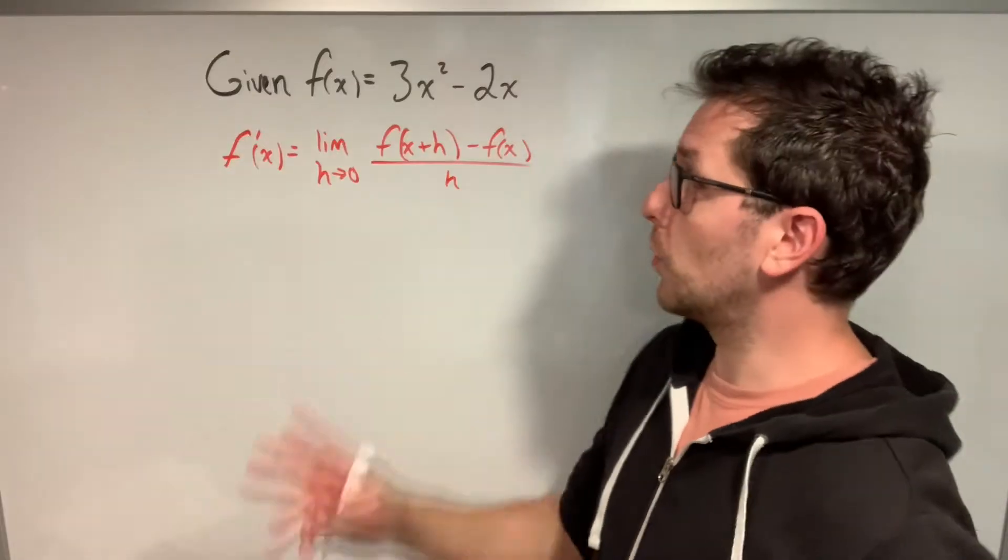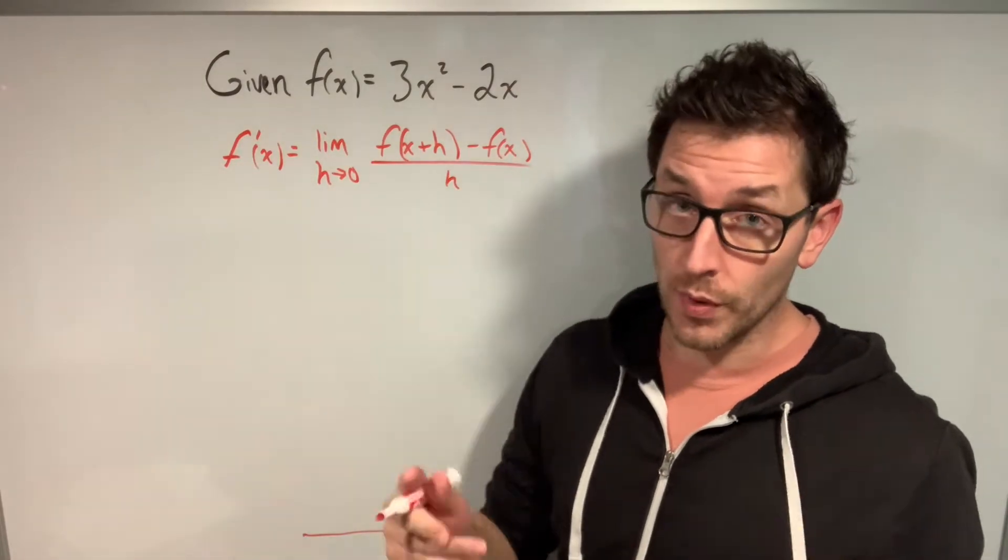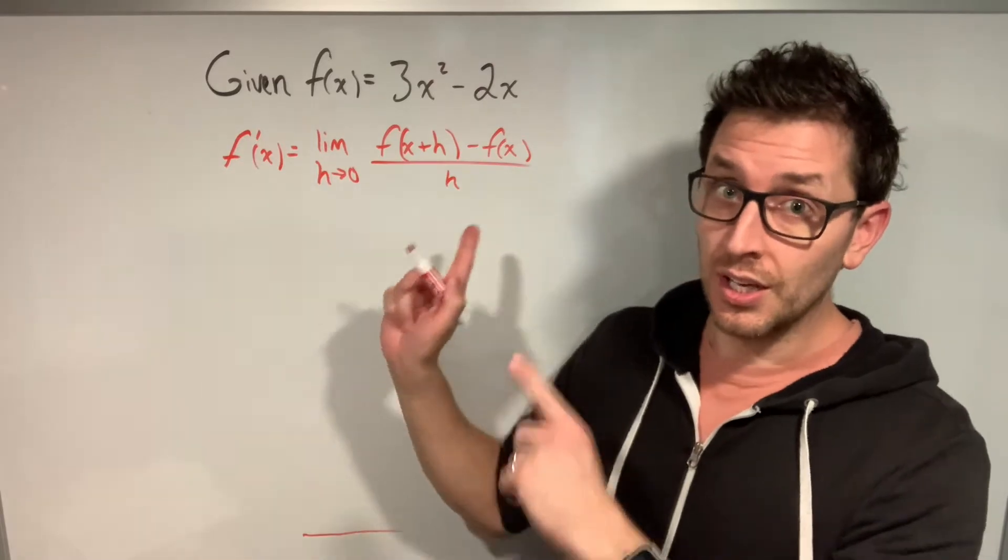All right, so in this example, we're given the function f(x) = 3x² - 2x. And we want to find the derivative of that function using the first principle's definition.